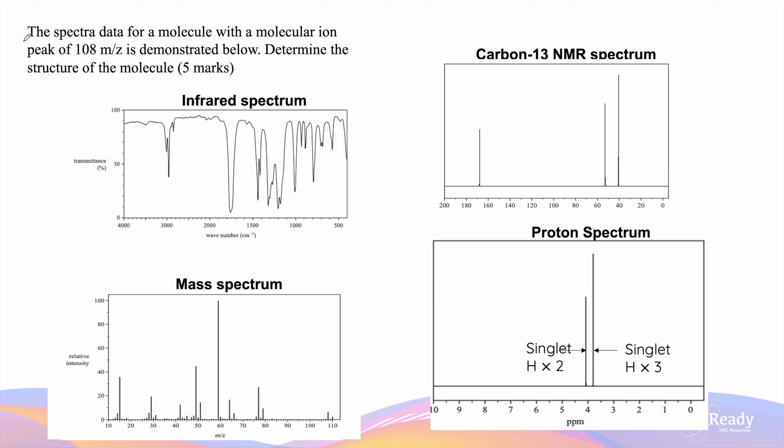So the question reads, the spectral data for a molecule with a molecular ion peak of 108 mass to charge ratios is demonstrated below. Determine the structure of the molecule.